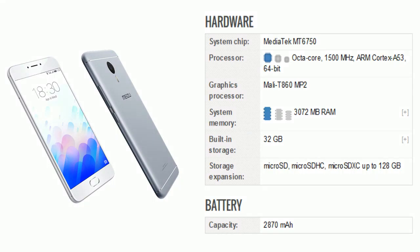Now comes hardware. The system chip is Mediatek MT6750. Processor is octa-core at 1500 MHz, ARM Cortex-A53, 64-bit. Graphics processor is Mali T860 MP2. System memory is 3072 MB RAM. Built-in storage is 32 GB. Storage expansion via micro SD, micro SDHC, and micro SDXC up to 128 GB. Battery: 2870 mAh.